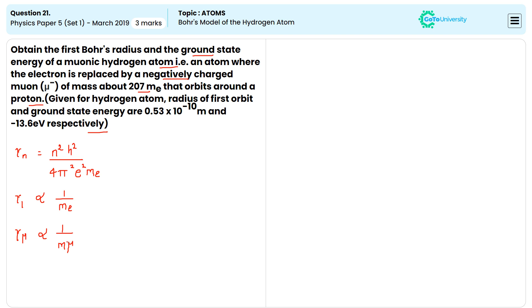Then rμ by re is equal to mE by mμ, which is equal to 1 upon 207.